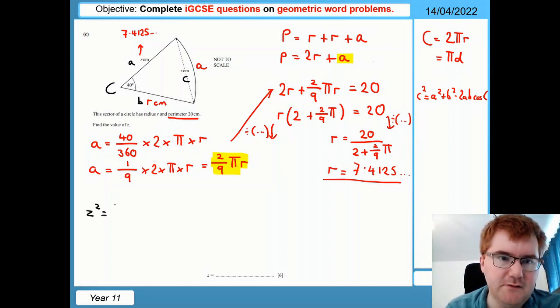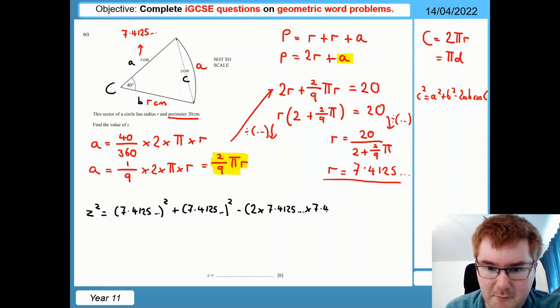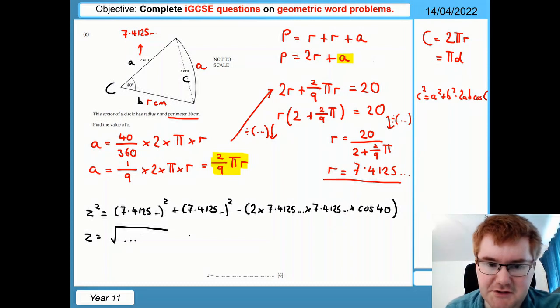So in order to work out this calculation, I'm going to do Z squared, because that's the side I'm looking for, is equal to 7.4125 dot dot dot squared plus 7.4125 squared minus 2 lots of 7.4125 dot dot dot times the cosine of the angle in the middle. And then to work out Z on its own, what's the opposite of squaring? Well, square rooting. So we're going to square root that entire calculation I've just written out.